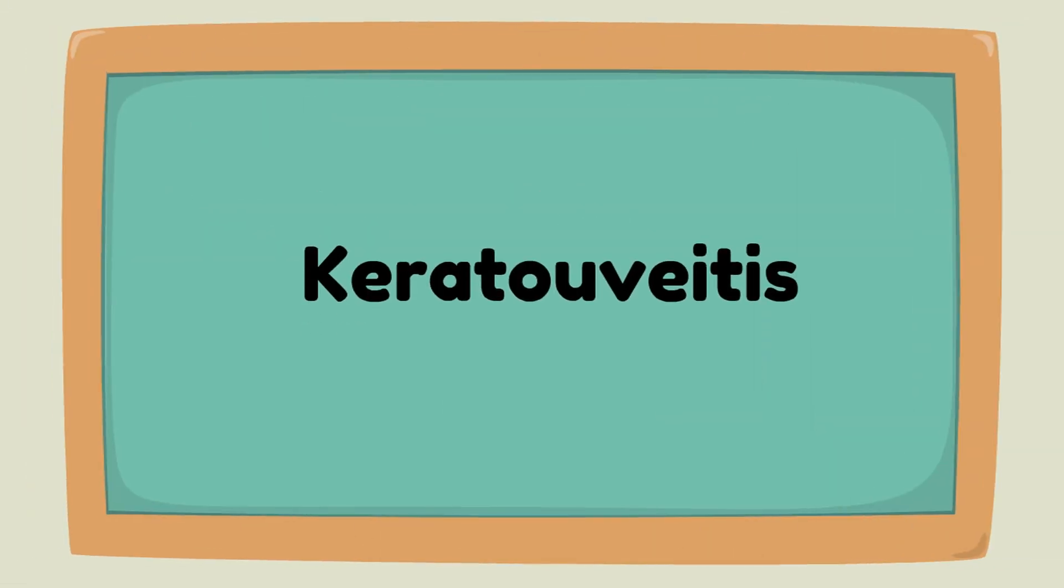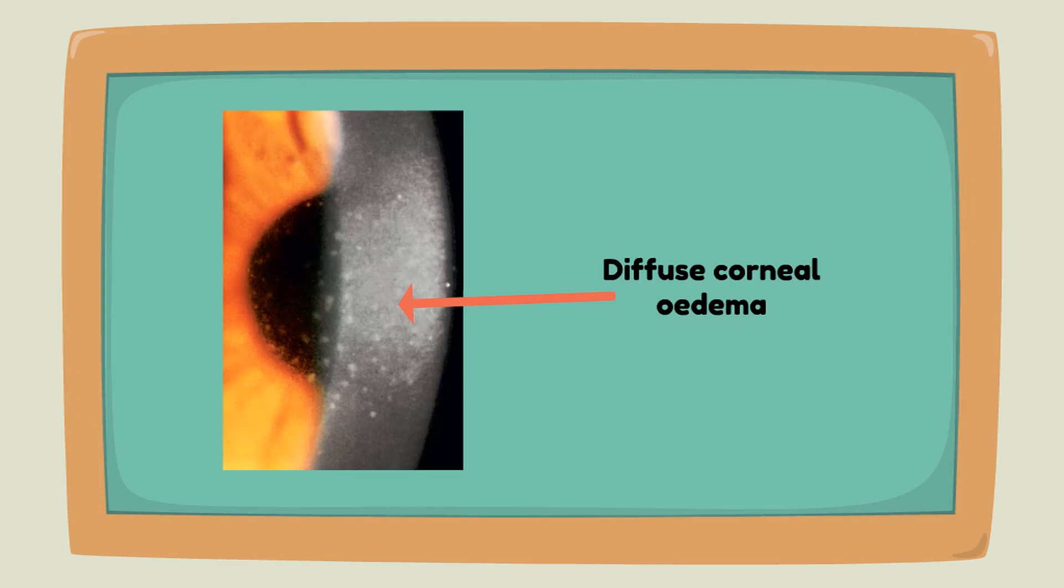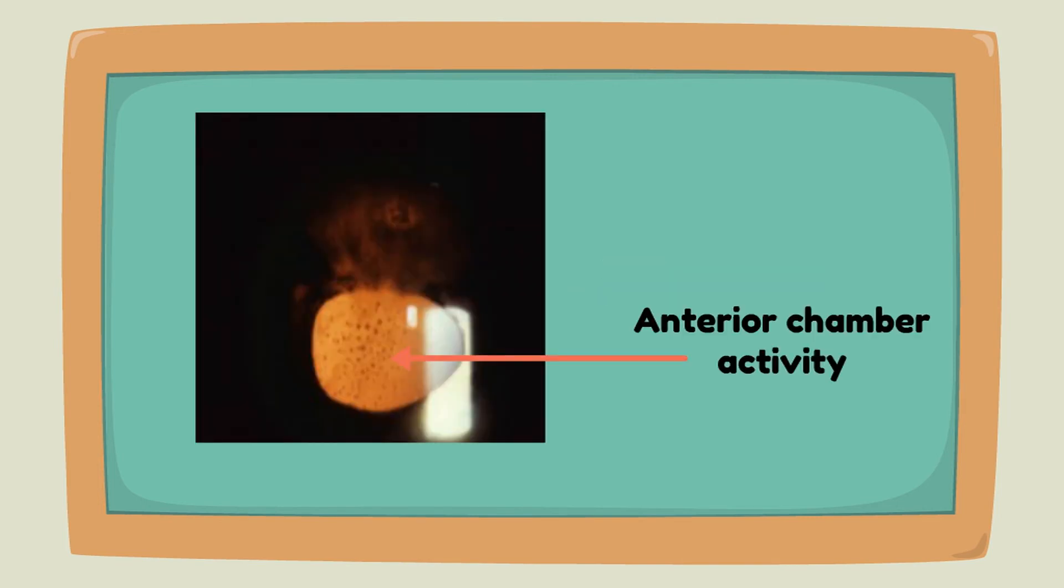Keratouveitis can present with diffuse corneal edema, stromal keratitis, keratic precipitates, and anterior chamber cells.